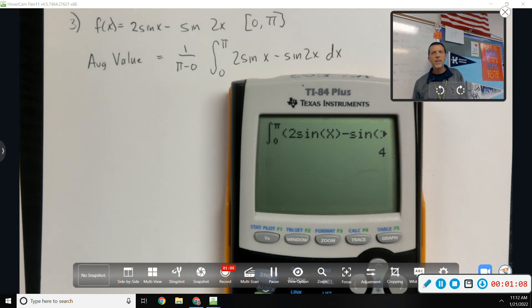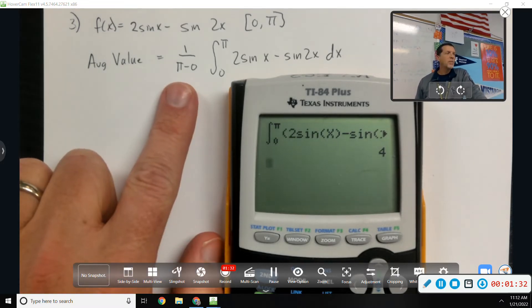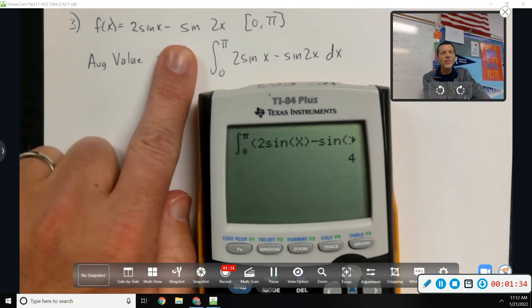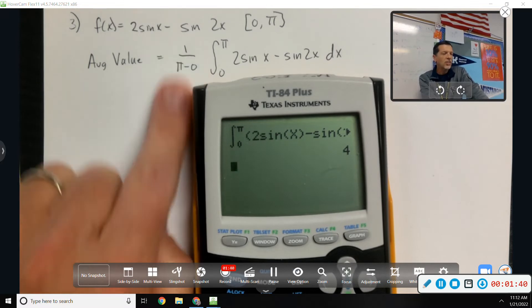Although, be careful. I do this all the time on purpose, mainly because I do it all the time on accident, even when I'm not paying attention. Why is four not the right answer? Why is four not the average value? Because you still have, it's one, it's the height of the weight. Yeah, because I haven't divided by pi yet.